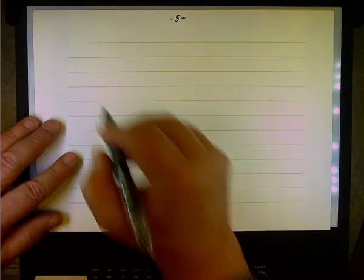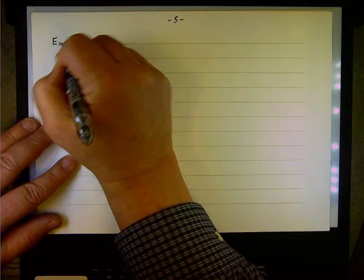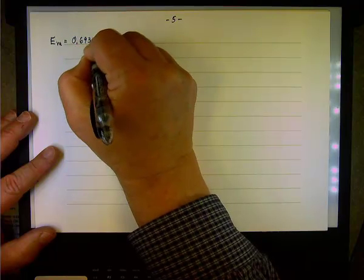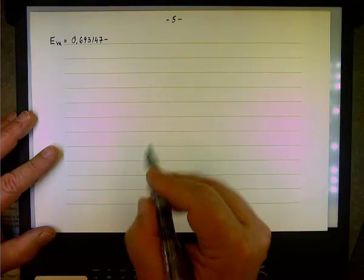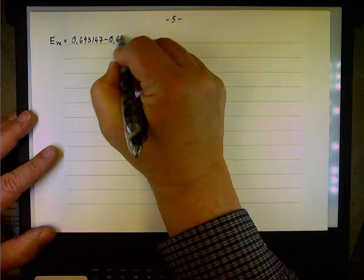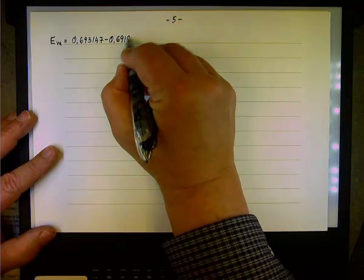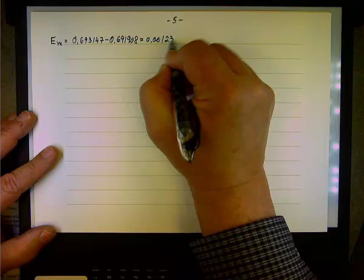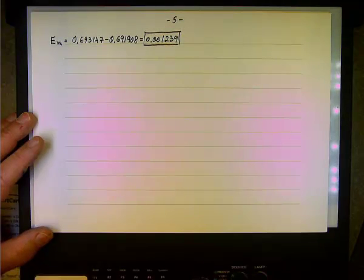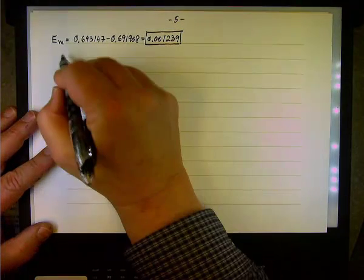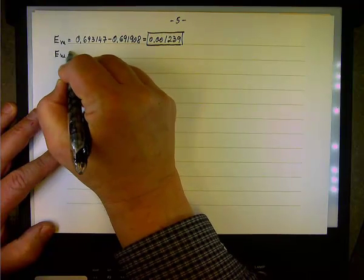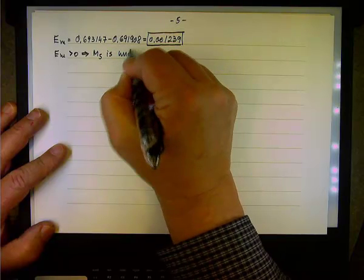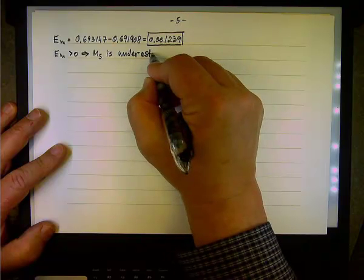So, what is it in our case? Let's look at E sub M, the error of the midpoint approximation. Well, the exact value is 0.693147. The approximated value using the midpoint technique is 0.691908. The difference is 0.001239. And it's positive, so the midpoint is underestimated. So M sub 5 is an underestimate.